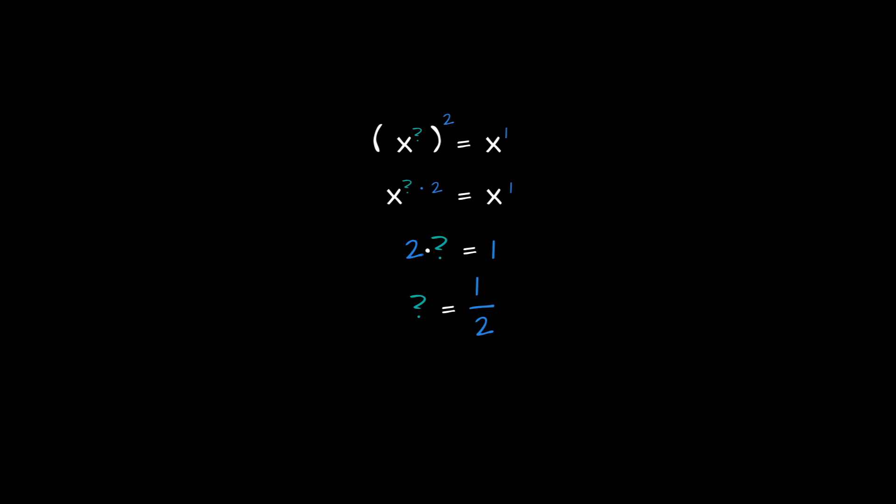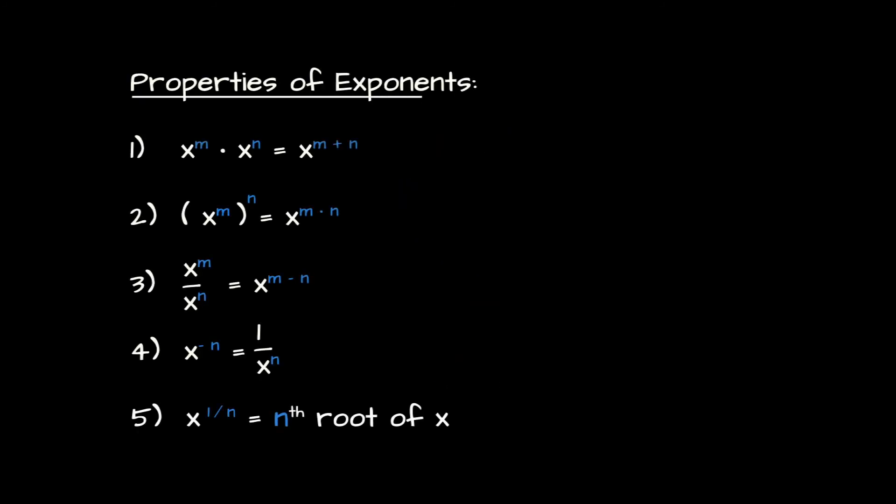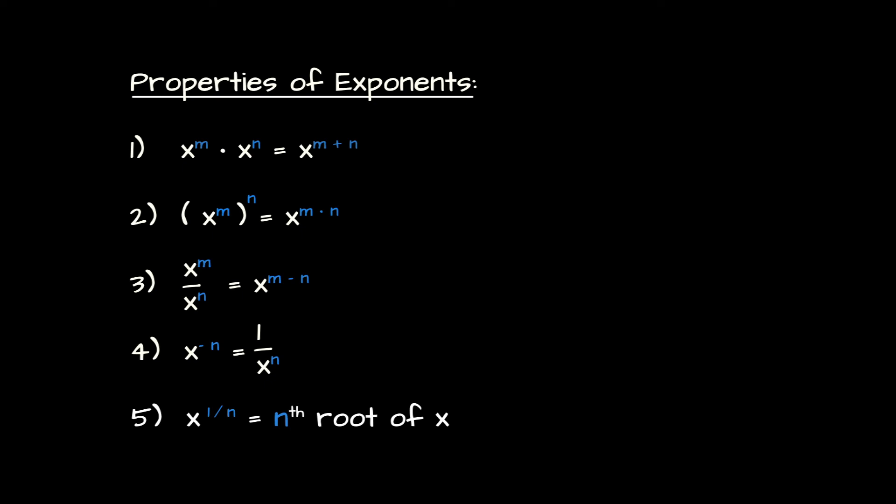The upshot is that it can make sense to raise a real number to a fractional exponent. In particular, x raised to the power one-half is a number we call the square root of x. In general, a real number x raised to the power one over n — a fractional power — equals the so-called nth root of x, which is a number that, when multiplied by itself n times, gives us x.